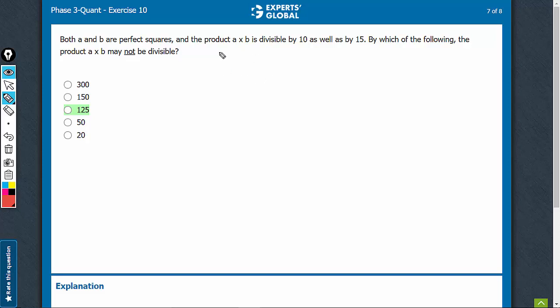A and B are both perfect squares. Product A into B is divisible by 10 and also by 15. 10 means 5 into 2, and 15 means 5 into 3.